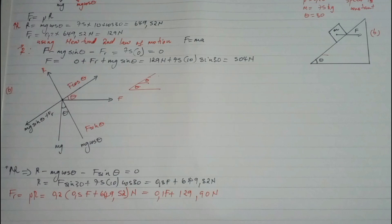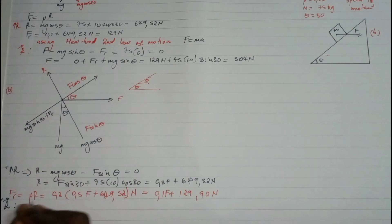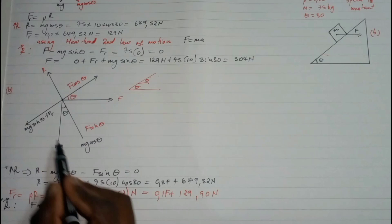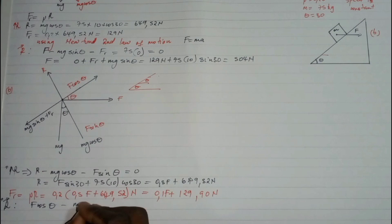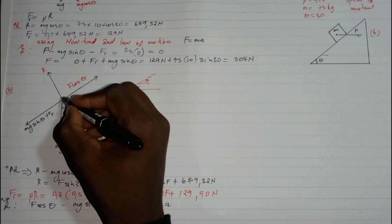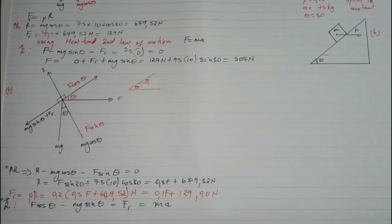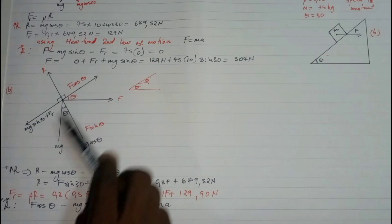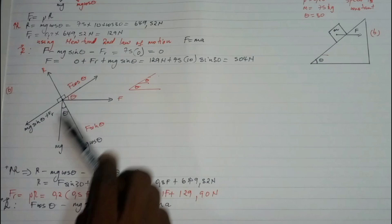Now I'll resolve parallel to the plane. Resolving parallel to the plane, the upward force is F cosθ, then we subtract mg sinθ and the frictional force Fr, and this equals mass times acceleration by Newton's second law. Forces perpendicular to the direction of motion do not affect the motion parallel to the plane.